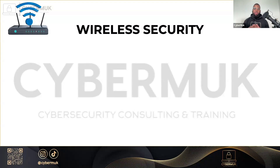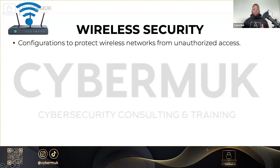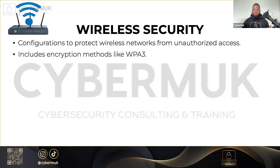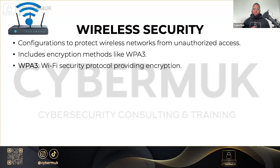Today, every device — laptops, servers, mobile phones — uses wireless security to connect to networks. Wireless security refers to configurations to protect wireless networks from unauthorized access. You don't want someone sitting outside or within the office able to access things they shouldn't. This includes encryption methods like WPA3 — Wi-Fi Protected Access Version 3 — a Wi-Fi security protocol that provides encryption to ensure your wireless network is secure. Today the most secure options are WPA3 and WPA2.